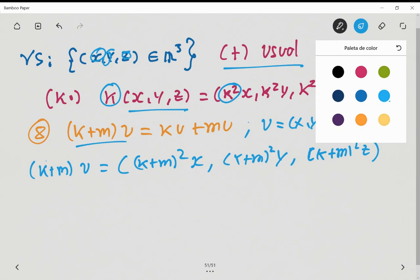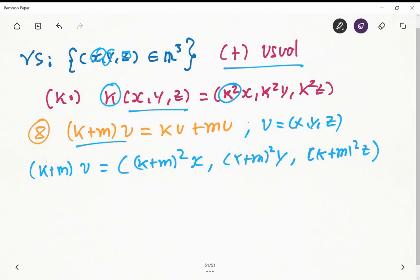And the right-hand side of this expression here is equal to ku plus mu, this is equals to k squared x, k squared y, and k squared z.